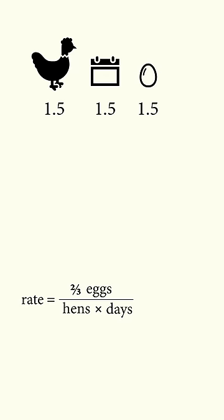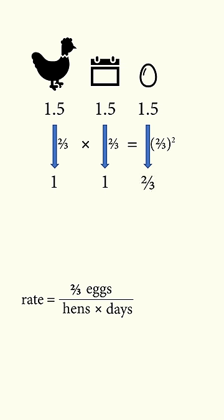So if you wanted to scale things down, you're scaling the number of hens by 2 thirds. You're scaling the number of days by 2 thirds. So you multiply these scaling factors. So you're scaling the number of eggs by the square of 2 thirds. Then 1.5 eggs multiplied by the square of 2 thirds is equal to 2 thirds eggs.